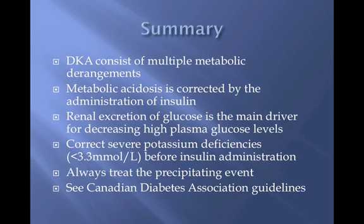In summary, DKA consists of multiple metabolic derangements. Metabolic acidosis is corrected by the administration of insulin. Renal excretion of glucose is the main driver for decreasing high plasma glucose levels. Correct severe potassium deficiencies before starting insulin. Always treat the precipitating event. Please see the Canadian Diabetes Association Guidelines.